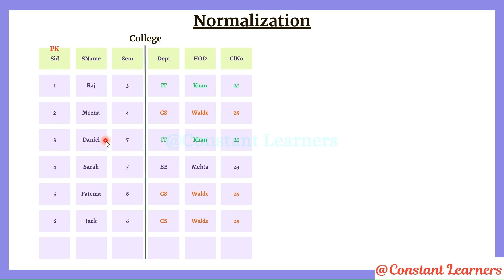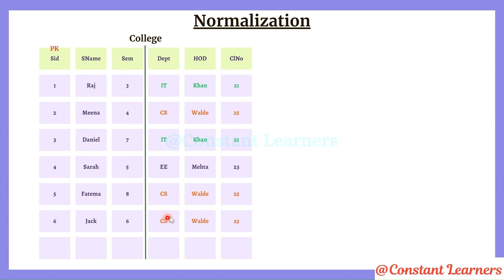Every time we have to insert new data, update already existing data, or delete existing data, we are going to face some challenges, and the database design will turn out to be inconsistent and erroneous. If you notice this table, we have two types of data: first is the student data — student ID, student name, semester, and department — and we also have the department data, wherein the head of the department and classroom are mentioned. So we have two different types of data in a single table, which is not a good design.